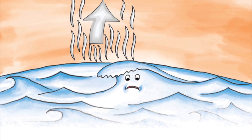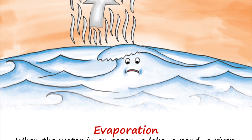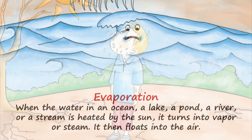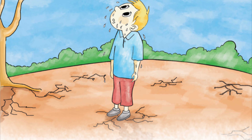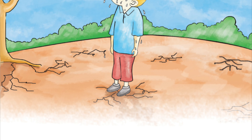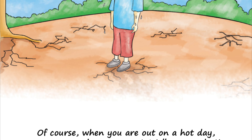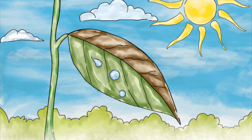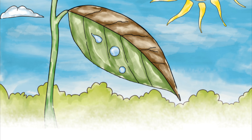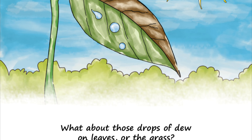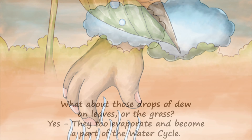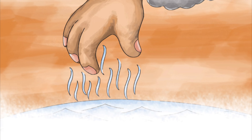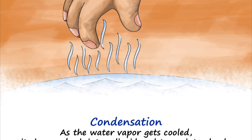Evaporation: when the water in an ocean, a lake, a pond, a river, or a stream is heated by the sun, it turns into vapor or steam and floats into the air. Of course, when you are out on a hot day or you exercise, you sweat — well, guess what, that evaporates too! What about those drops of dew on leaves or the grass? Yes, they too evaporate and become a part of the water cycle.